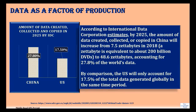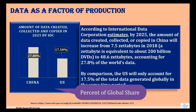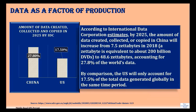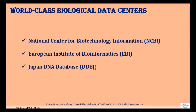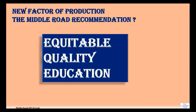By 2025, according to IDC, China will have 27.80 zettabytes of data created, collected, and copied, whereas the US will be at 17.50. This is a very interesting analysis of how much data is being generated. There are also world-class biological data centers: the National Center for Biotechnology Information, the European Institute of Bioinformatics, and the Japan DNA Database. Data could be used in different spheres of industry, and with the pandemic, biological data centers have become very important.